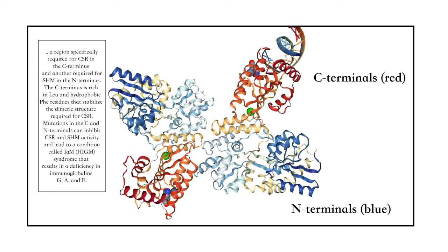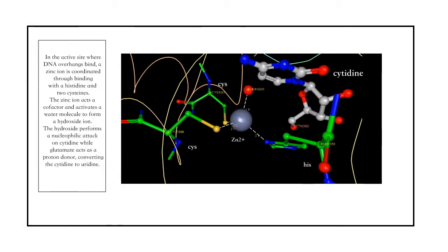In the active site where DNA overhangs bind, a zinc ion is coordinated through binding with a histidine and two cysteines. The zinc ion acts as a cofactor and activates a water molecule to form a hydroxide ion. The hydroxide then performs a nucleophilic attack on cytidine while glutamate acts as a proton donor, converting the cytidine to uridine.